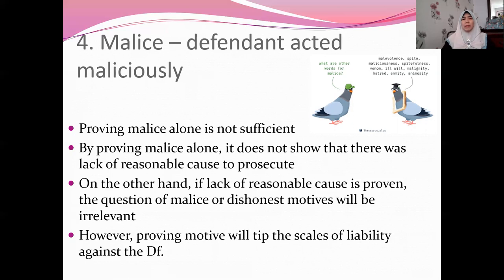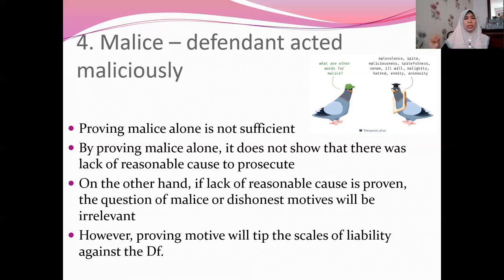If the plaintiff proves the third element — lack of reasonable cause — malice is considered as automatically proved as well. But if the plaintiff proves both no reasonable cause and also proves the element of malice, the significance is that proving malice together with motive will tip the scales of liability against the defendant. So on top of malice being automatically proved, motive can also be proved together, which increases the probability of winning the case against the defendant.